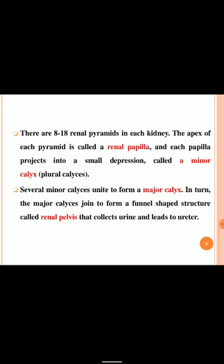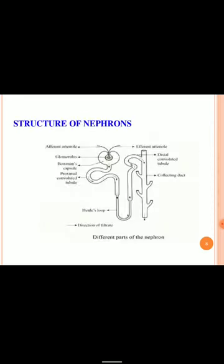After the formation of urine, the urine is collected in the renal pelvis and finally sent to the ureter. With the help of nephrons, urine is created. Nephrons have parts like afferent arteriole, efferent arteriole, glomerulus, Bowman's capsule, proximal convoluted tubule, loop of Henle, distal convoluted tubule and collecting duct.